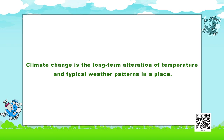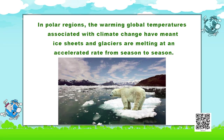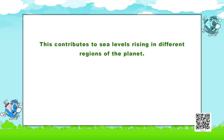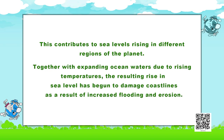Climate change is a long-term alteration of temperature and typical weather patterns in a place. Climate change could refer to a particular location or to the globe as a whole. In polar regions, the warming global temperatures associated with climate change have meant ice sheets and glaciers are melting at an accelerated rate from season to season. This contributes to sea levels rising in different regions of the planet. Together with expanding ocean waters due to rising temperatures, the resulting rise in sea level has begun to damage coastlines as a result of increased flooding and erosion.